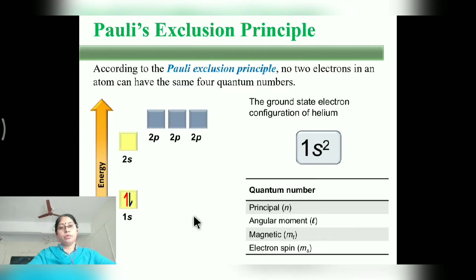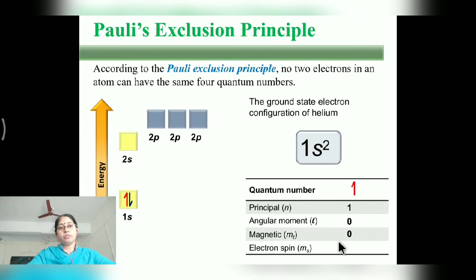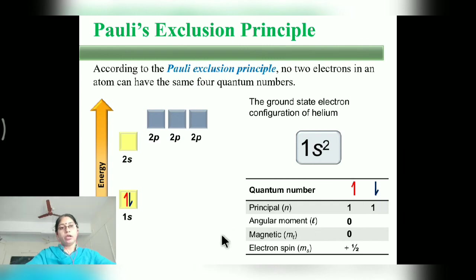For example, if we define the first electron with N=1, L=0, ml=0, then its spin is +1/2. If we take a second electron in the same sub-shell with N=1, L=0, ml=0, then its spin quantum number must be −1/2. This illustrates Pauli's Exclusion Principle.